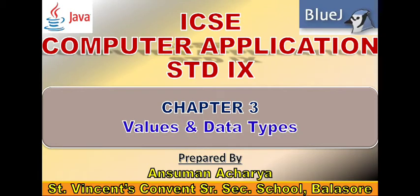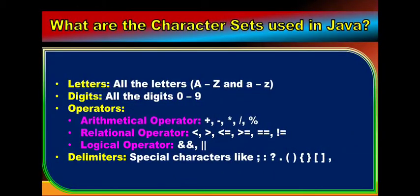Welcome dear students. In this video we are going to learn Chapter 3, that is Values and Data Types. First, what are the character sets used in Java? Java allows various character sets like letters both uppercase and lowercase, digits from 0 to 9, various operators like arithmetical, relational, and logical operators, and some delimiters — special characters like semicolon, colon, question mark, dot symbol, parentheses, curly brackets, square bracket, and comma.